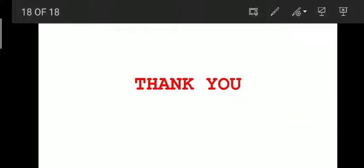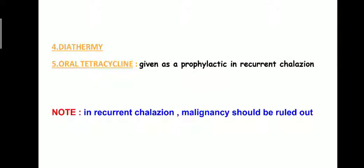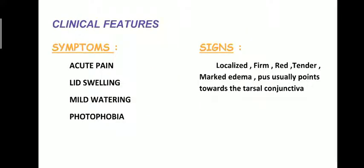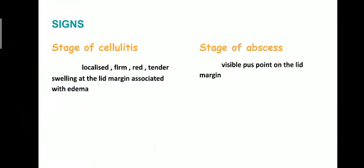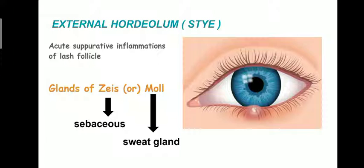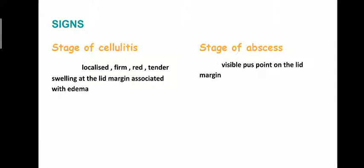Summary: the three main eyelid diseases are hordiolum externum (stye), hordiolum internum, and chalazion. Hordiolum externum is an acute suppurative inflammation of the glands of Zeis and Moll. There is painful red swelling and the pus point is on the lid margin. It has two stages: stage of cellulitis and stage of abscess formation.